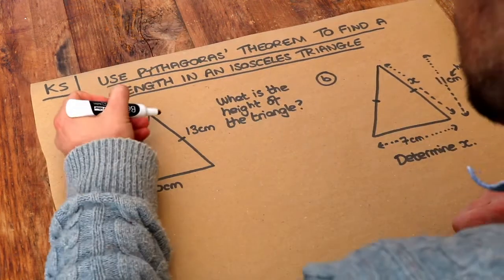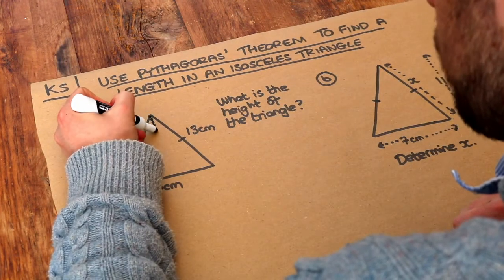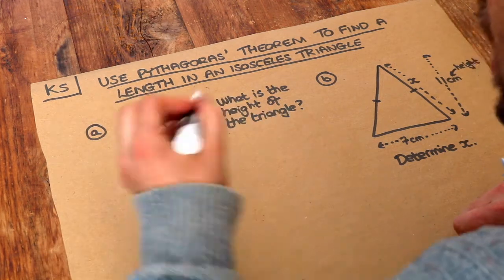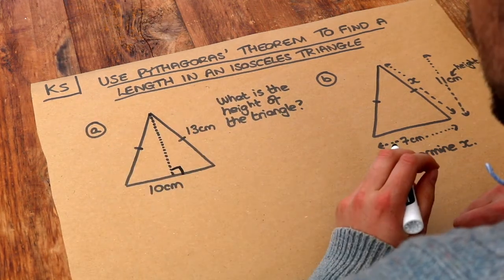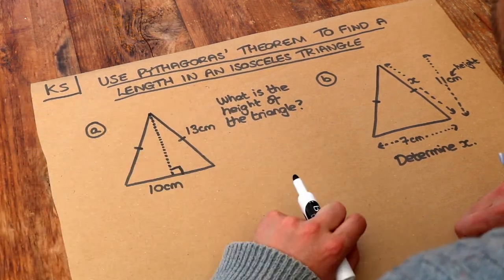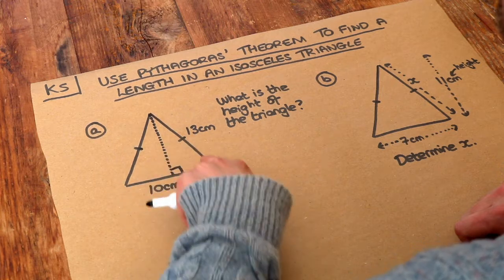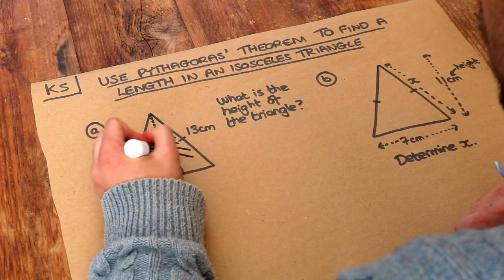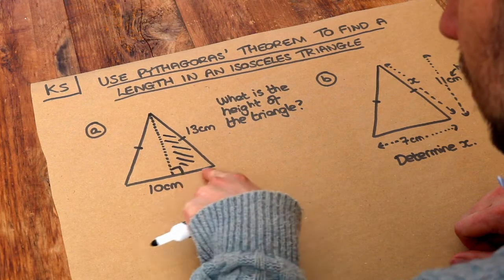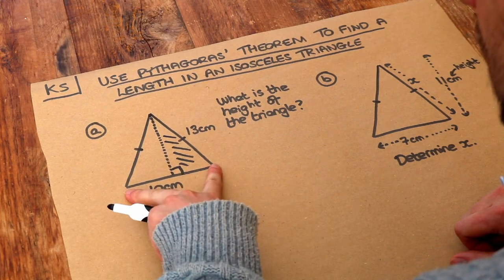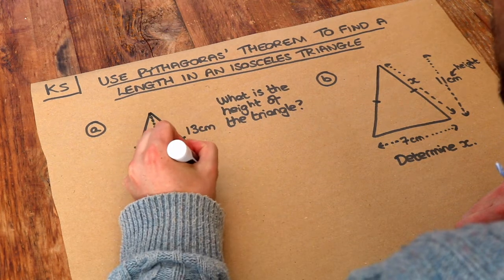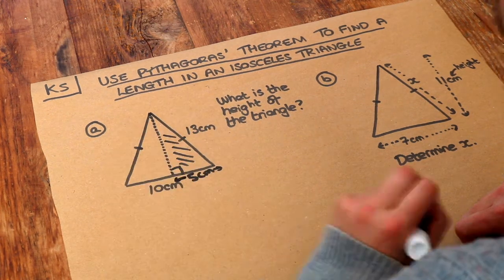But if we were to split an isosceles triangle in two down its line of symmetry, can you see that we now have a right angle triangle? So we want to find the height of this particular triangle. Do we have two of the lengths? Let's use this half. We've got the hypotenuse, it's 13. We have this bottom length because if this 10 centimeters is split exactly in half, that's 5 centimeters there, and then we have everything we need to find this height.